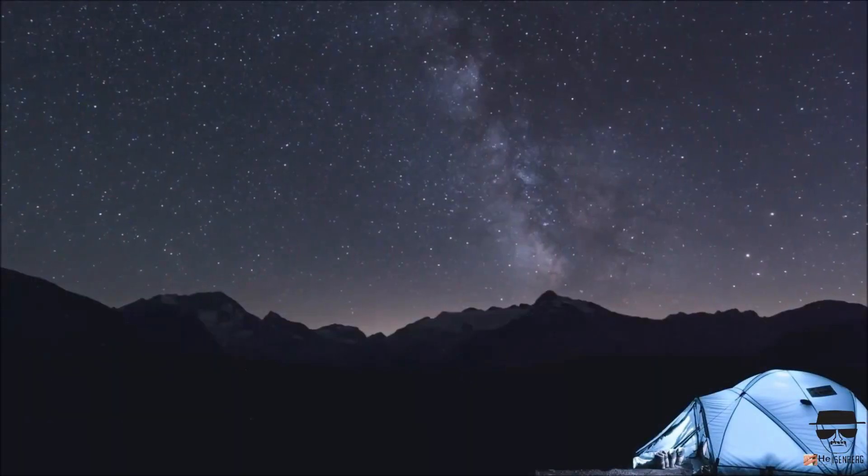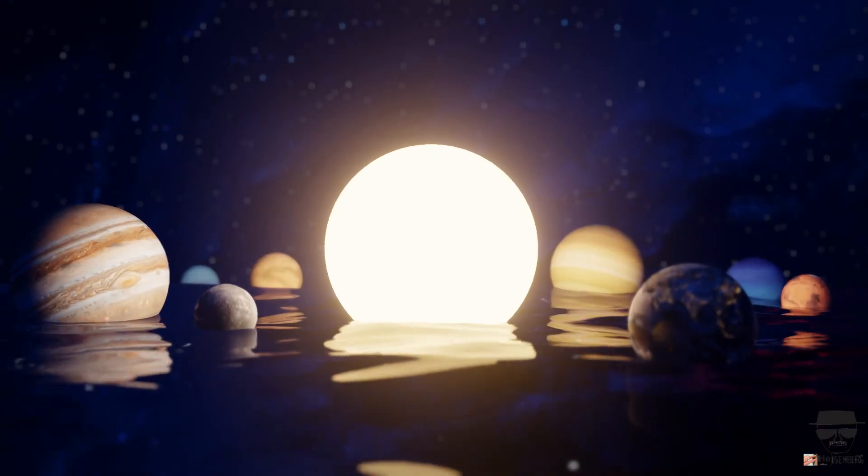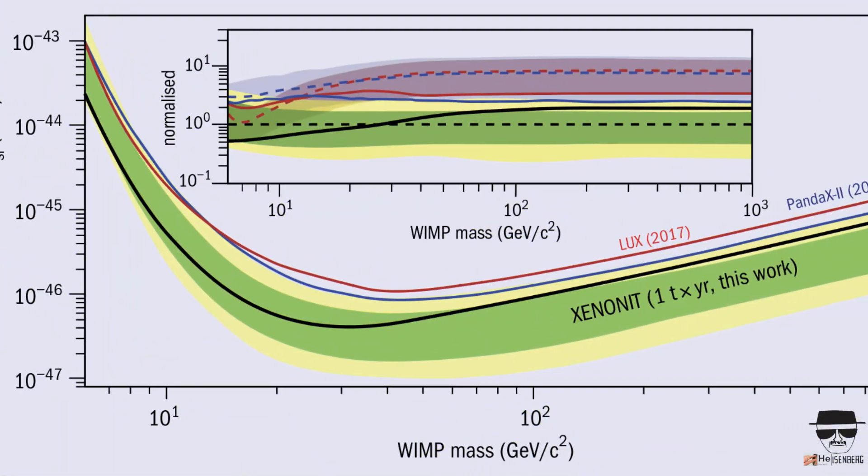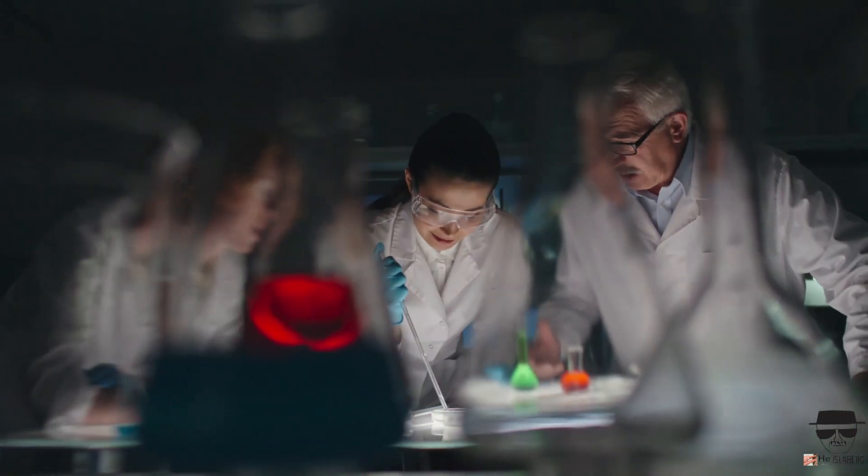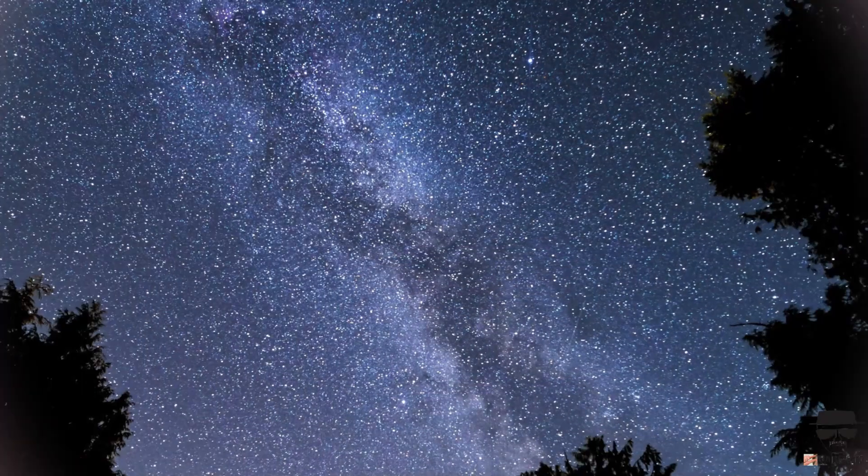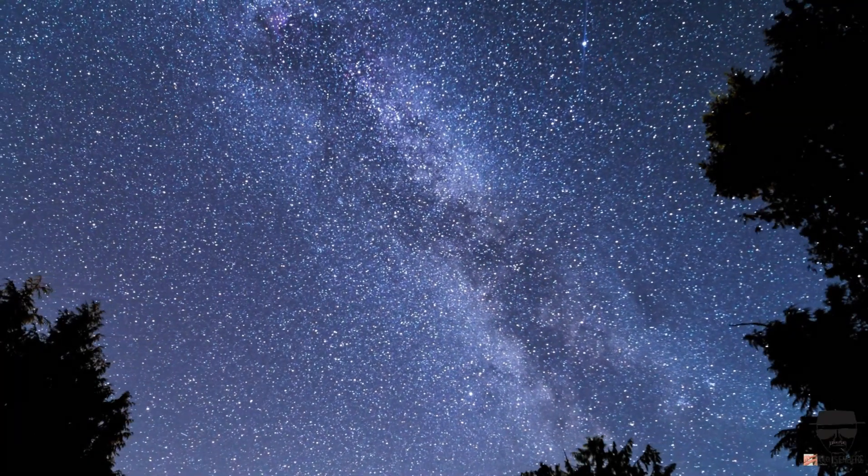If WIMPs exist, they pervade galaxies, including our Milky Way, and even our own solar system. Depending on the mass of the WIMPs, astronomers estimate that if you make a fist, one dark matter particle could be found inside it.